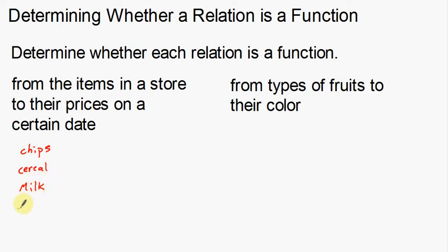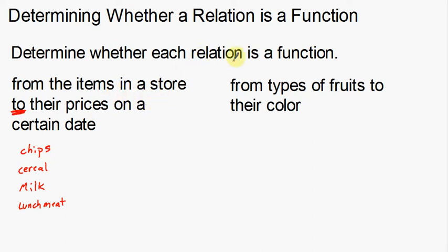We can get milk, and we can get lunch meat for sandwiches. These are just a couple of things you can see in the store. These are the first piece of my relation — a relation is a comparison of two different things. Now that word 'to' gives you the division between your two things: the items in the store to their prices on a certain date. That's how you can tell what the two pieces in the relation are.